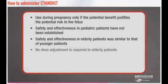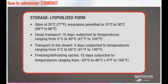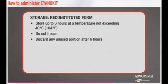No adjustment of dose is required in elderly patients. No data are available about overdose with Cyanokit in adults. Should overdose occur, treatment should be directed to the management of symptoms. Cyanokit should be stored at 77 degrees Fahrenheit, with excursions permitted from 59 degrees to 86 degrees Fahrenheit. It may be exposed during short periods to temperature variations of usual transport, transport in the desert, and freezing or defrosting cycles. Once reconstituted, hydroxocobalamin is stable for up to 6 hours at temperatures not exceeding 104 degrees Fahrenheit. Do not freeze the reconstituted solution. Any reconstituted product not used in 6 hours should be discarded.